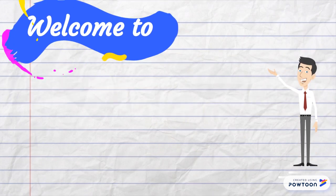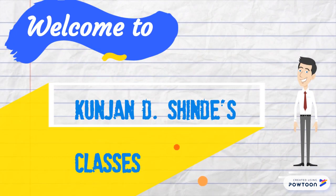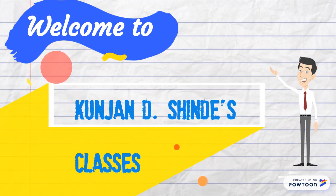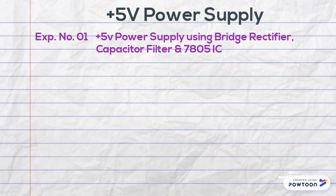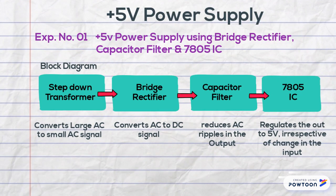Hey guys, this is Kunjan Deishinde. I welcome you all to my classes. Today's topic is plus 5 volts power supply design using bridge rectifier, capacitor filter and 7805 regulator IC.